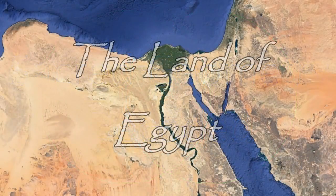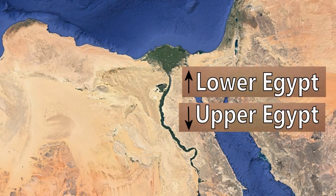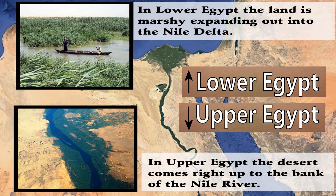Let us consider the land of Egypt, but more importantly the ancient land of Egypt. We tend to think of Egypt now as a nation defined by modern borders. However, historically in the ancient times, Egypt was defined by at least two distinct areas culturally and environmentally — those areas being lower and upper Egypt. In upper Egypt the desert came right up to the bank of the Nile River, with a very thin strip of fertile land during the annual flood season.